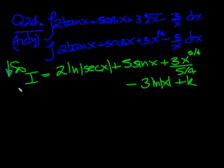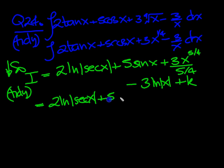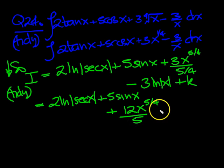So that's the integration done now, so let's just tidy it up a little. So that equals 2 ln sec x plus 5 sin x plus, now the 4 swings up to be with 3 to make 12, x to the 5 over 4, over the 5 that's there, minus 3 lots of ln modulus of x plus k.